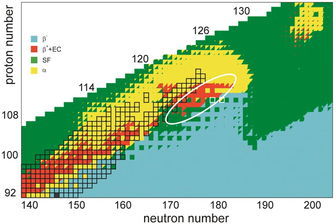Element 118, oganesson, is the last element that has been synthesized. The next two elements, 119 and 120, should form an 8s series and be an alkali and alkaline earth metal respectively. Beyond element 120, the superactinide series is expected to begin, when the 8s electrons and the filling 8p½, 7d3/2, 6f5/2, and 5g7/2 subshells determine the chemistry of these elements.